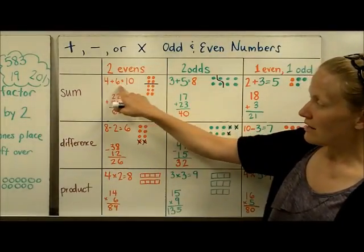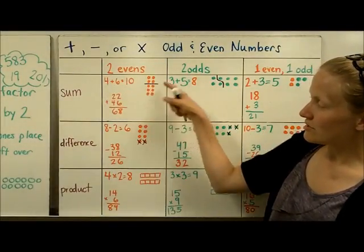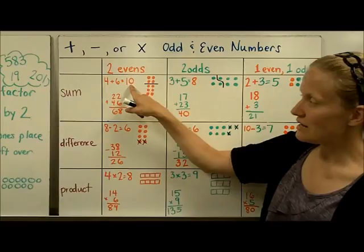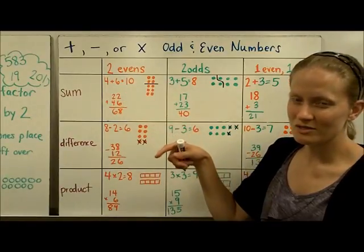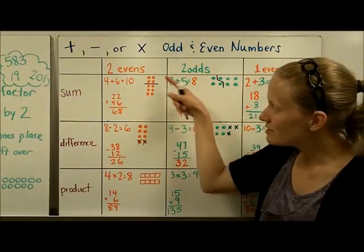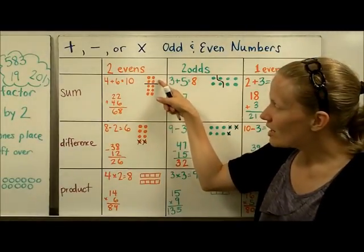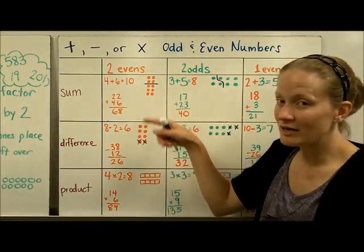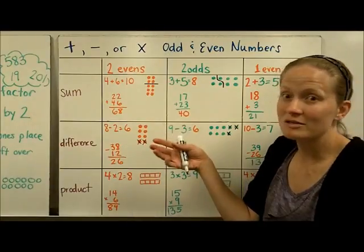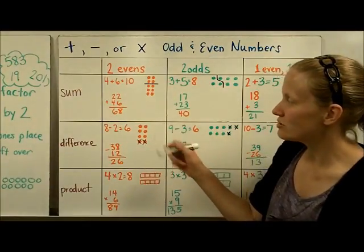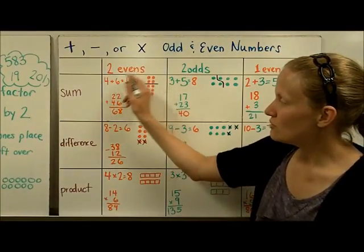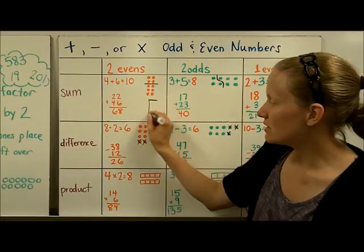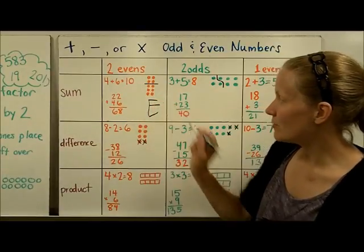When you add two even numbers, as shown in this picture, you get an even number as a result. It makes sense because you're going to have pairs and more pairs — pairs with none left over. So two evens added together is always going to be an even number.